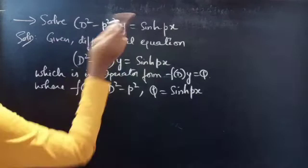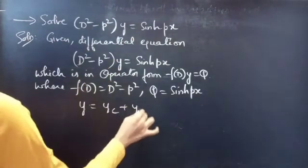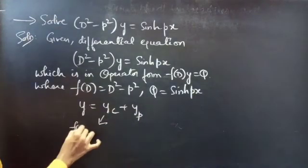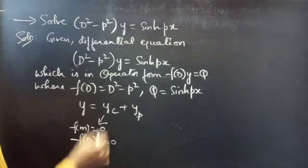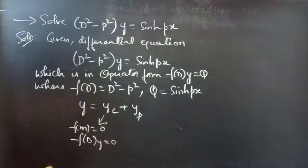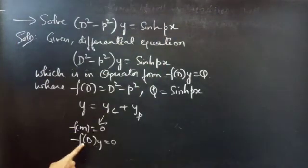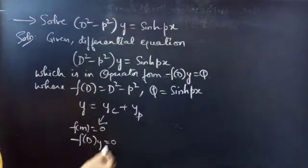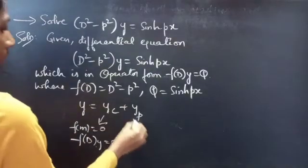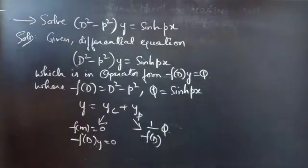The general solution of the non-homogeneous equation is y = yc + yp. We will find yc using the auxiliary equation of the corresponding homogeneous equation (treating Q as 0), and we will find yp using 1/f(D) · Q.